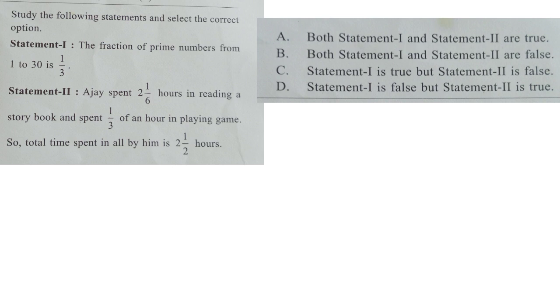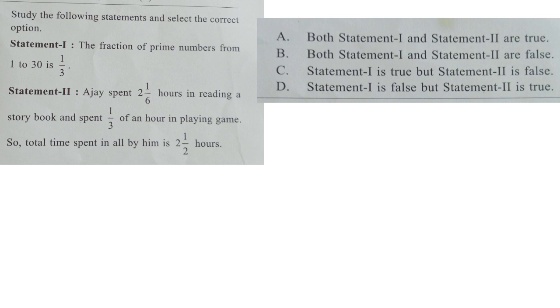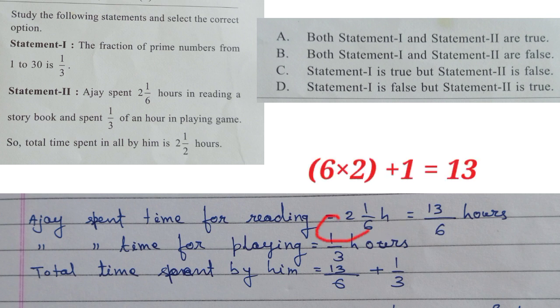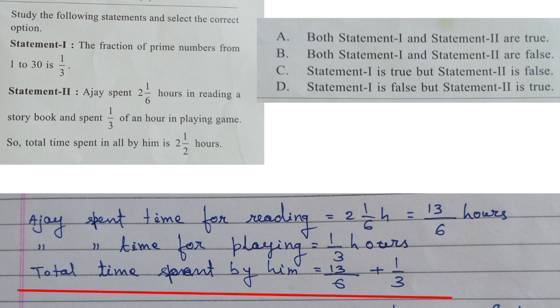Let us check if this statement is correct or false. Given Ajay spent 2 1 by 6 hours for reading. This is a mixed fraction. First we have to convert it to improper fraction: 6 into 2, 12 plus 1, 13 by 6 hours. Ajay spent time for playing 1 by 3 hours.